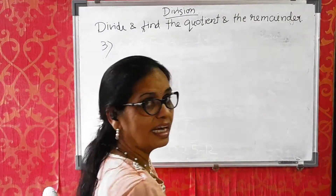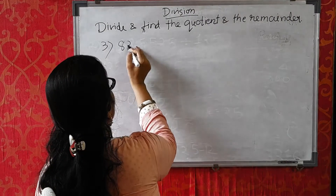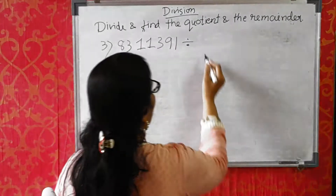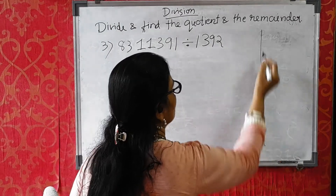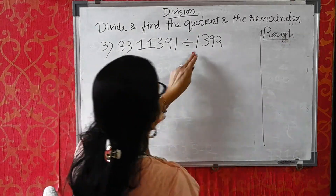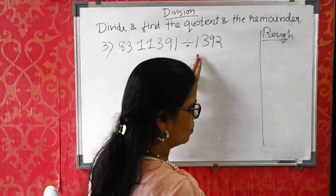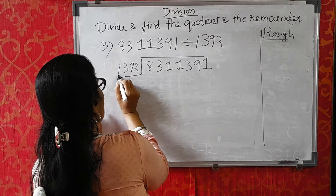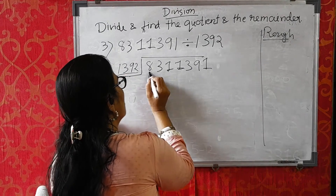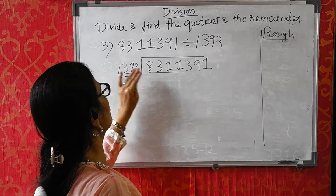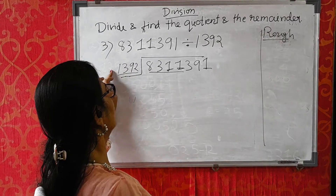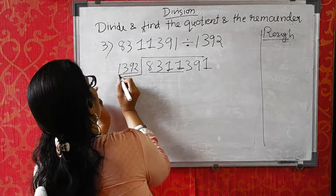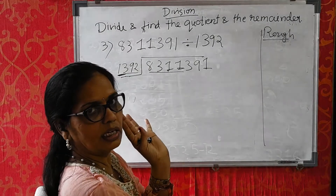Now sum number 3. I will take a 4-digit divisor: 8311391 divided by 1392. I am making a rough column but not writing out the full table to 10 — that will consume time. First step: always see the number of digits in the divisor — here 4 digits. Take 4 digits from the dividend. This number should be equal to or bigger than the divisor. So start solving. I know the 13 table because I don't know the 1392 table. I take 2 digits from the divisor and 2 corresponding digits from the dividend — here 83.